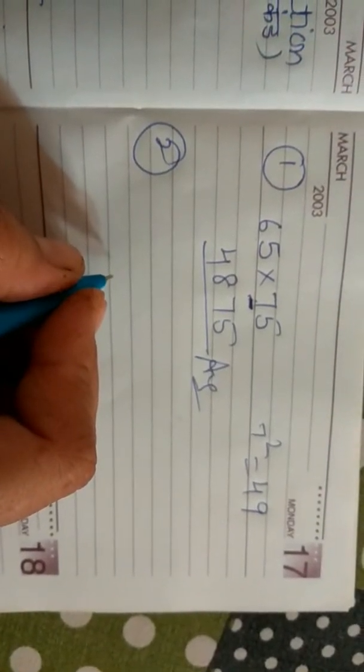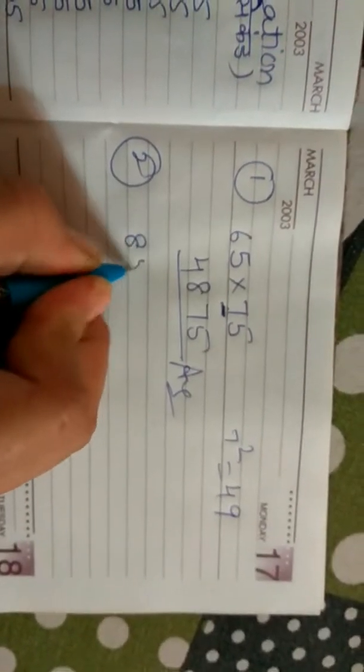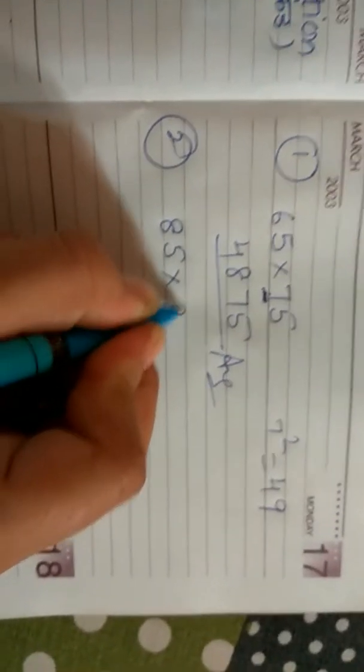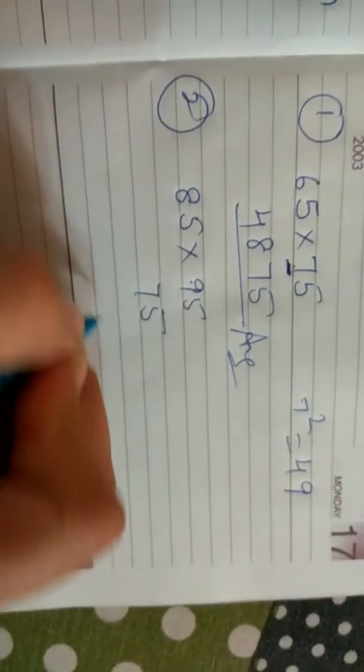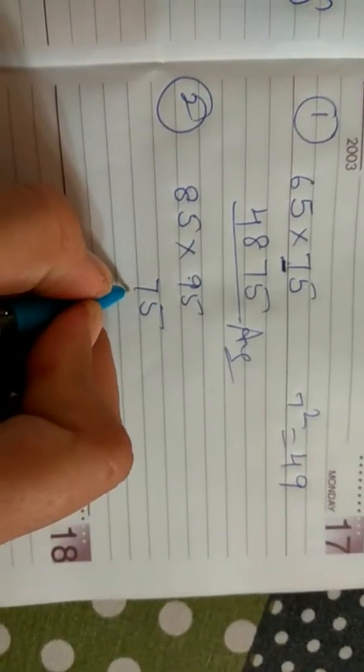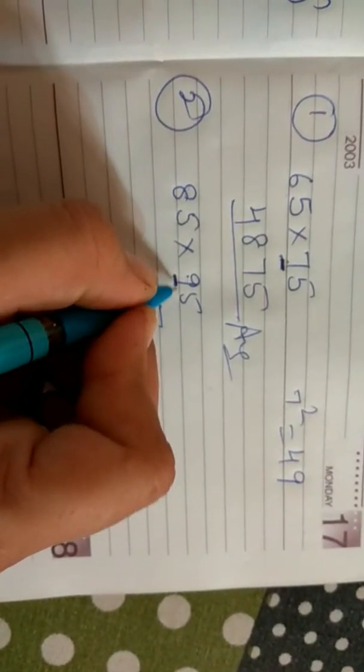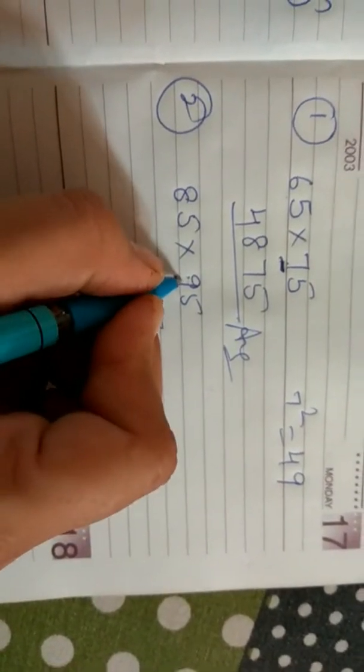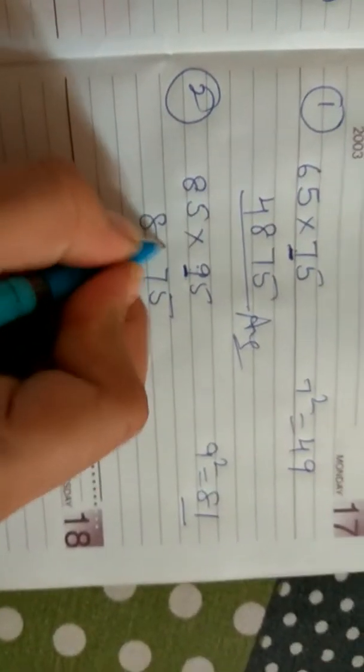Clear? See one more example. Just like 85 into 95. Always first we can write 75 in every question. Then the bigger number's first digit we will take - that's 9. 9 square is 81. Minus 1 from that. This is our answer: 8075.